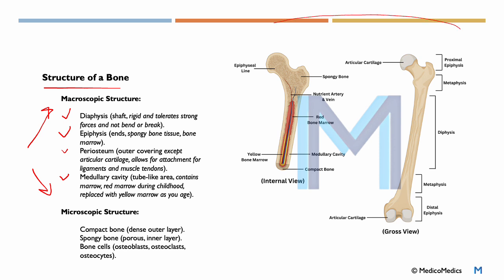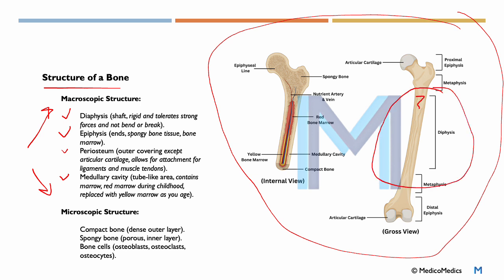If you look at this illustration here, you will see that the diaphysis is covered here. This is the shaft of the bone. It is much more rigid and is made to tolerate strong forces and to not bend or break. Towards the ends, we have the epiphysis, and it contains spongy bone tissue. It contains bone marrow, and in bone marrow is where we have the production of our blood cells, for example.